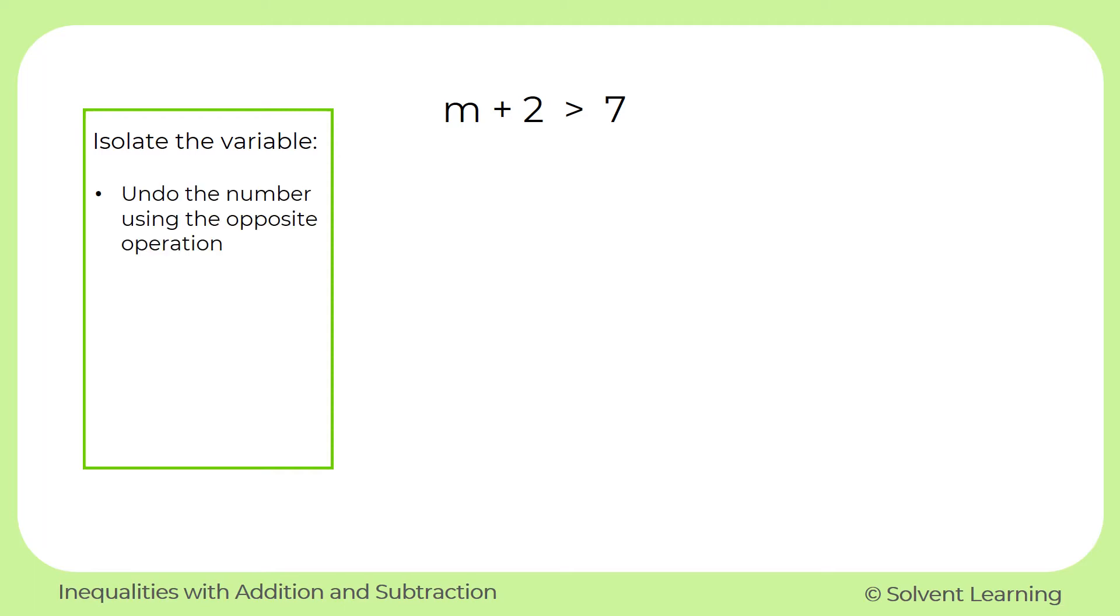And undo any numbers that are with it. And we'll use the opposite operation to undo that number, which in this case is the number 2. Whatever we do to that side of the inequality, we have to do the same thing on both sides. And then once our variable is by itself, we'll check the inequality symbol to make sure that it does work for our final solution.